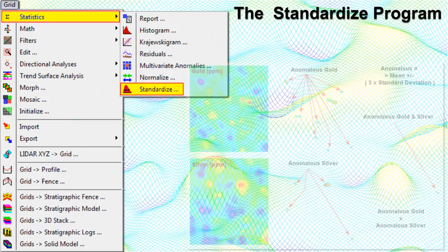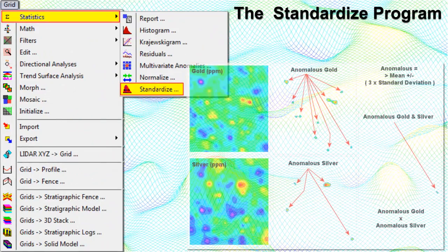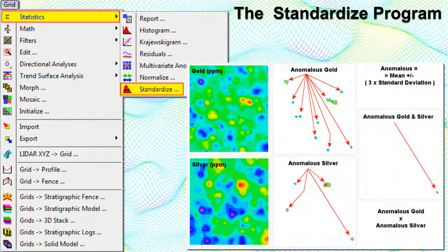The Standardize program recomputes the grid node values such that they represent the standard deviations from the mean. When examining the new model, node values between 0 and 1 can be considered background; values between 1 and 2 can be considered slightly anomalous, 2 and 3 are moderately anomalous, 3 and 4 are strongly anomalous, and values above 4 are extremely anomalous. In this example, we have standardized two geochemical models and multiplied them together to isolate areas where both chemicals are anomalous.